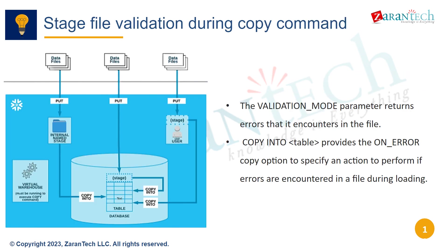The VALIDATION_MODE parameter in the copy command checks for errors in data files, returning any issues encountered. The ON_ERROR option specifies an action to take if errors are hit when loading a file.